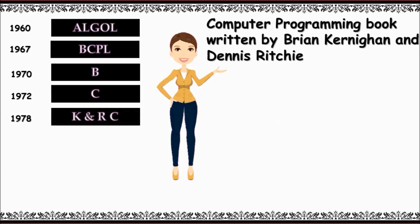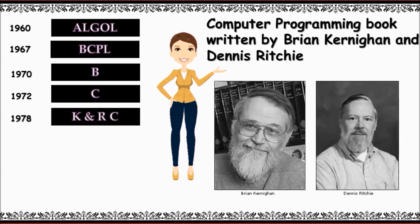The C programming book written by Brian Kernighan and Dennis Ritchie originally designed and implemented the language. They also co-designed the Unix operating system, with which the development of the language was closely tied. The book was widely read and used even today.